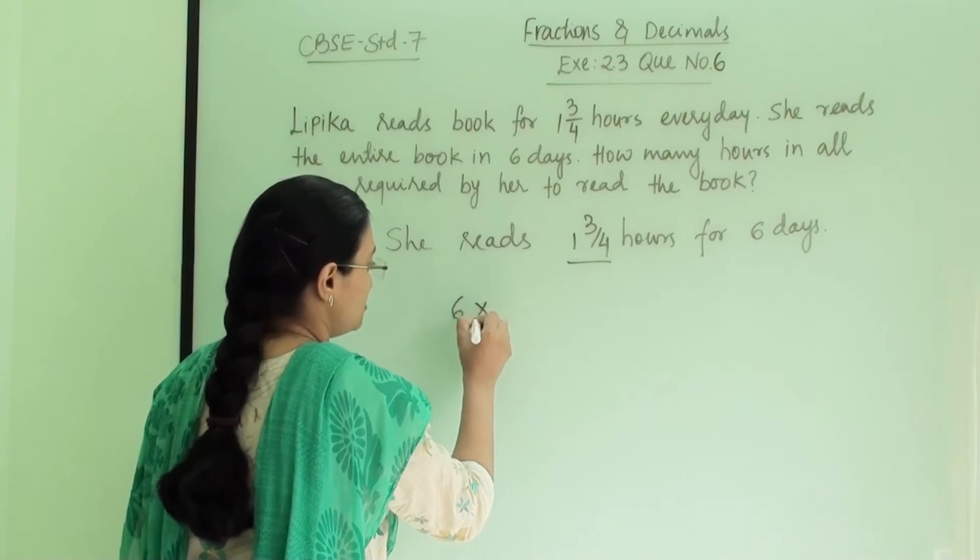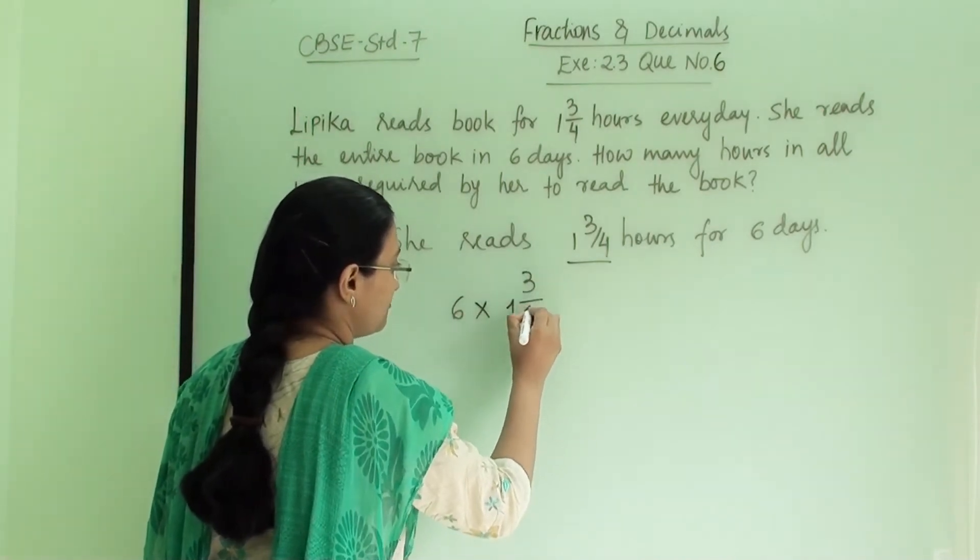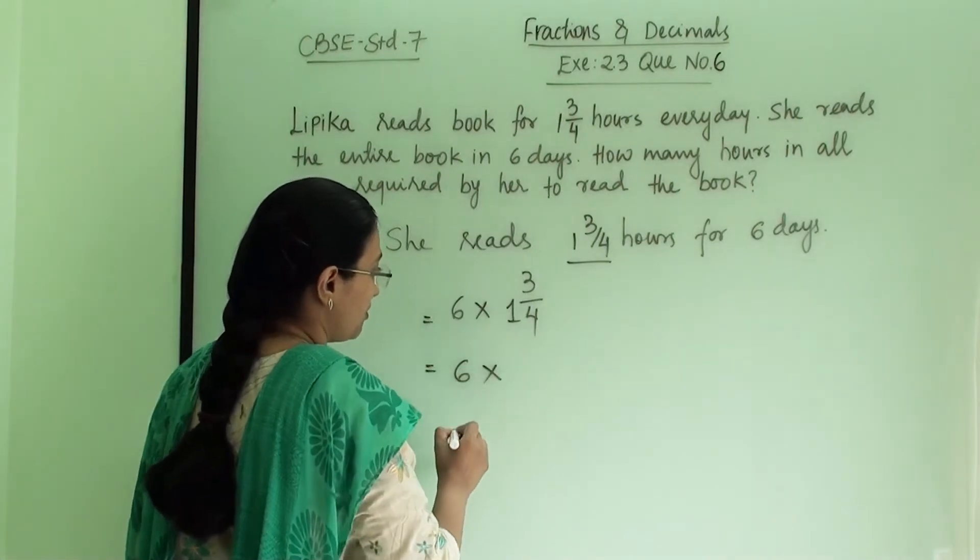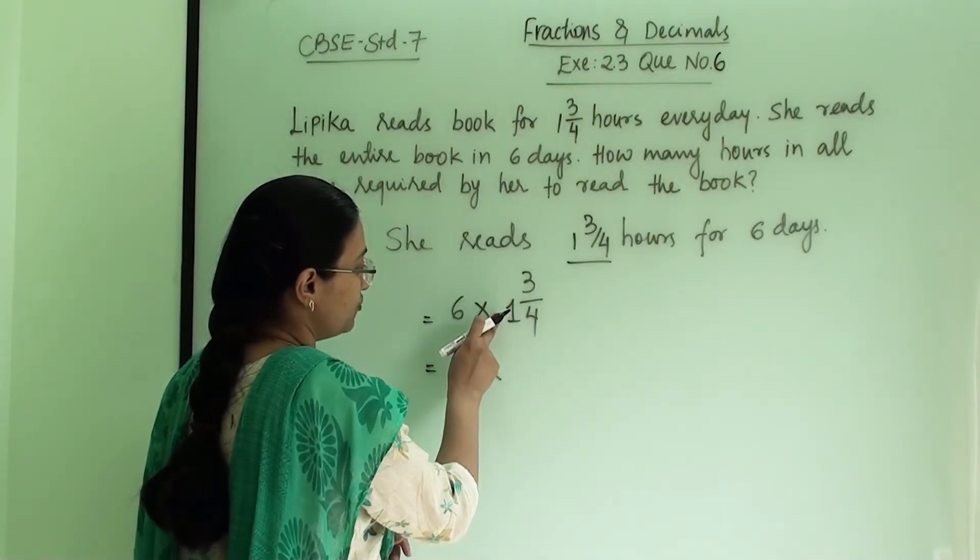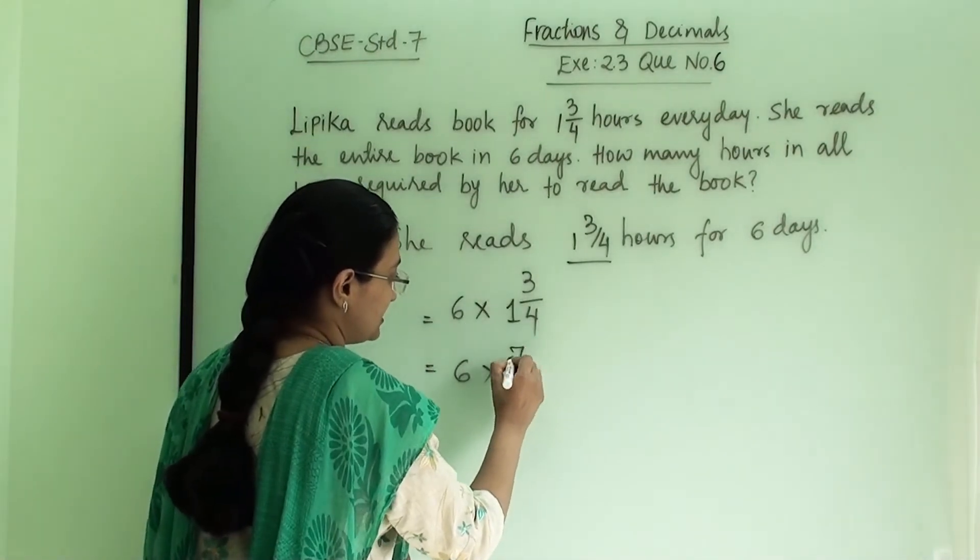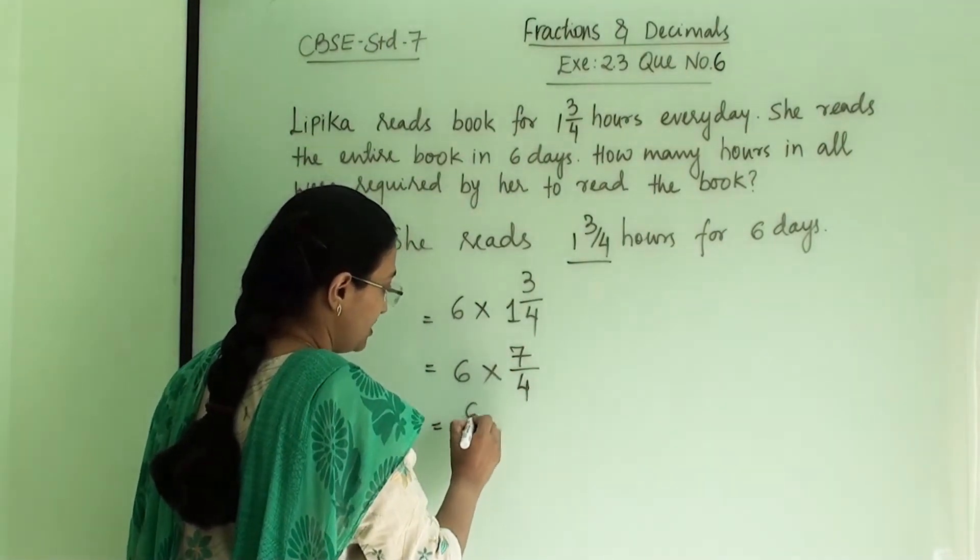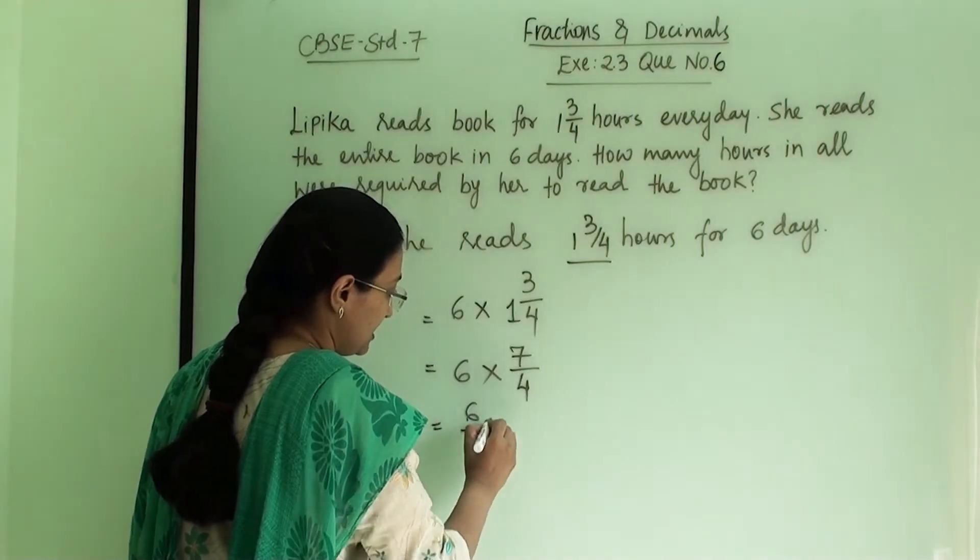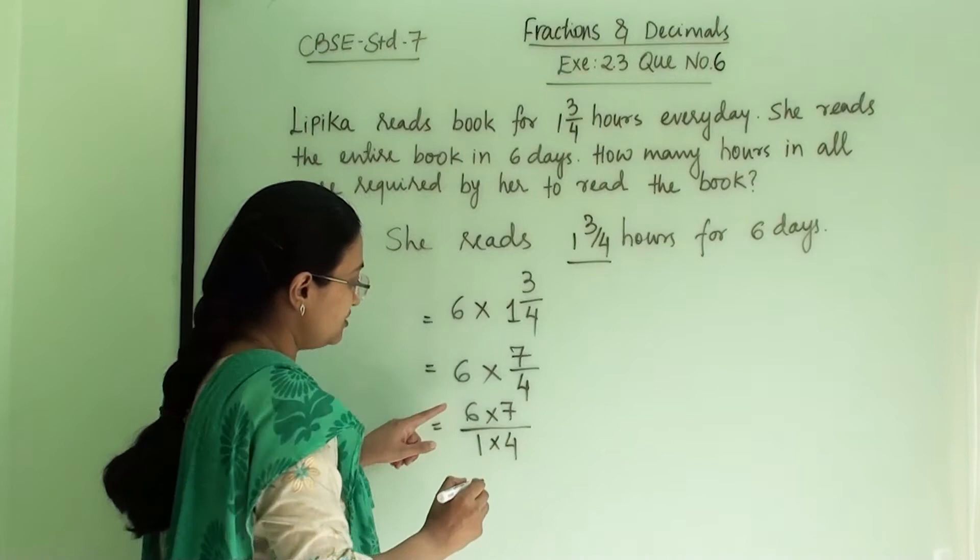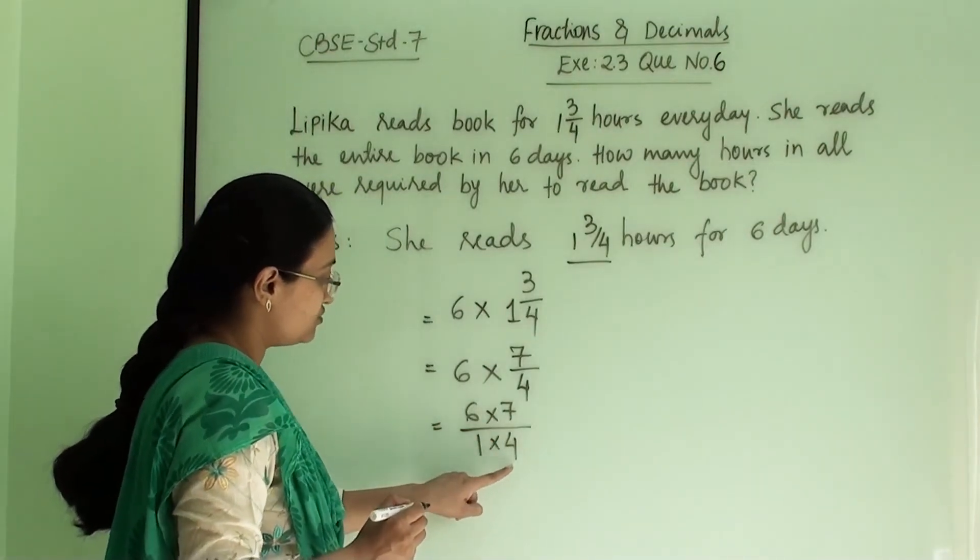So 6 into 1 3 by 4. Now let us convert this into improper fraction. So 1 times 4 is 4 plus 3. So we will get here 7 divided by 4. This is a whole number, so we will write 1 here and then followed by multiplication. That's 6 into 7, 1 into 4.